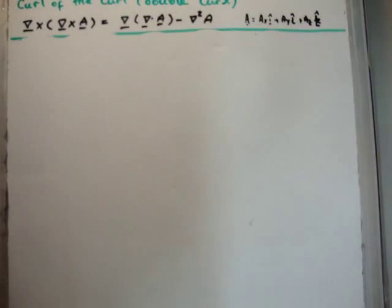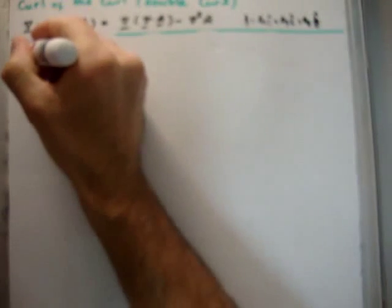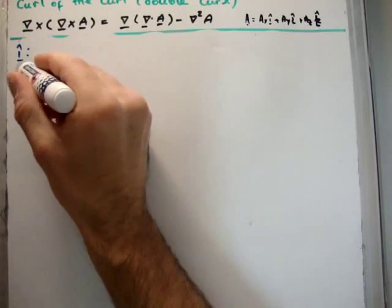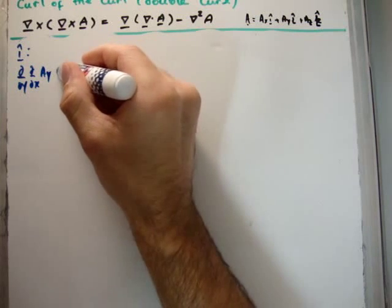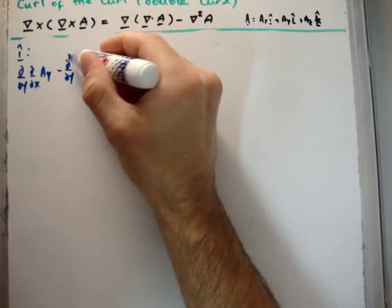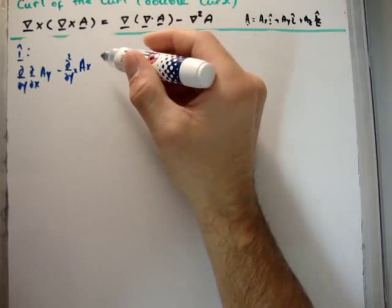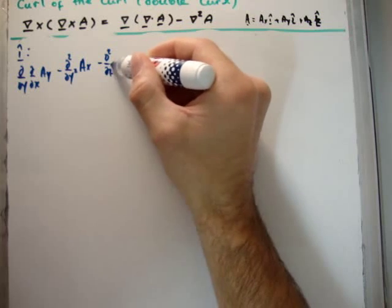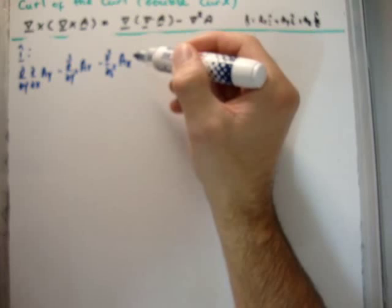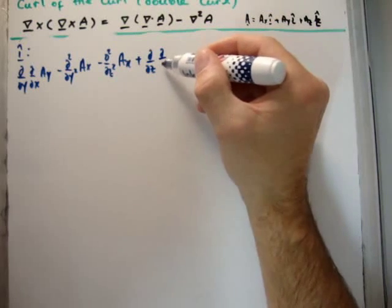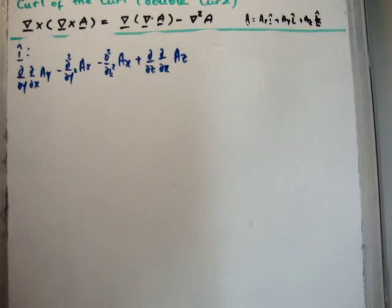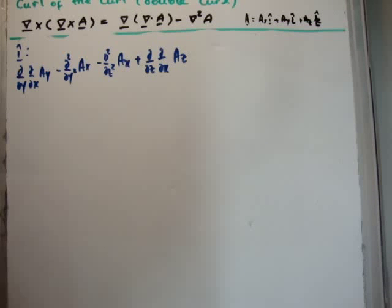So what we're doing is we're looking for symmetries. You can actually see the answer written on top, so that should help you. But to be honest, even without the answer it isn't that difficult. So let's go in the i hat direction. We have del del y, del del x, A sub y. We have, I'm going to write it this way for a particular reason, del squared del y squared of A sub x. We have del squared del z squared A sub x. And we also have plus del del z, del del x, A sub z. Now there are two different ways of simplifying this expression. Both of them are equivalent, but one is easier than the other. So we're looking for symmetries. Well, the immediate symmetry I see here is this one.